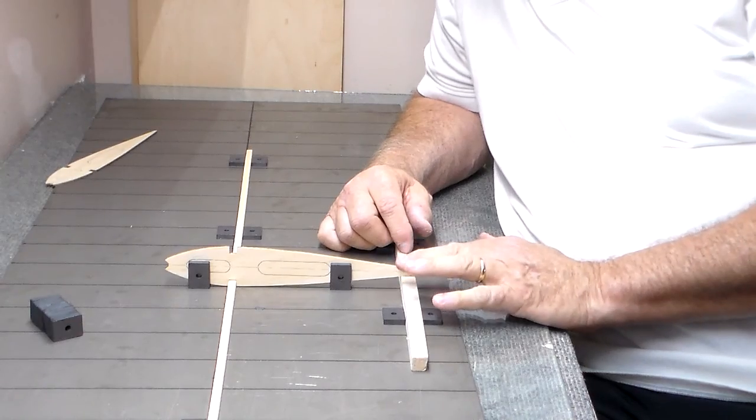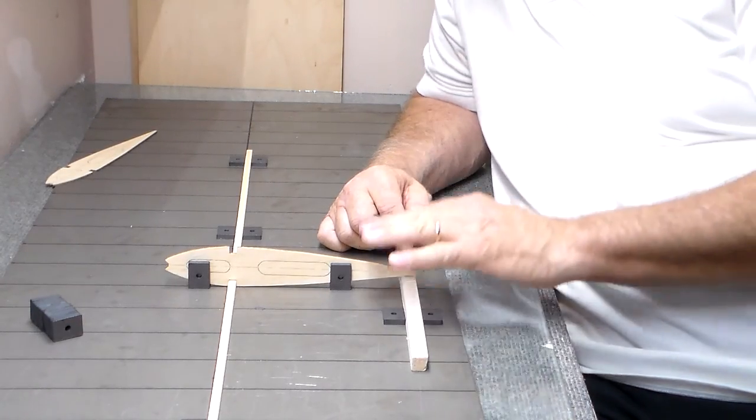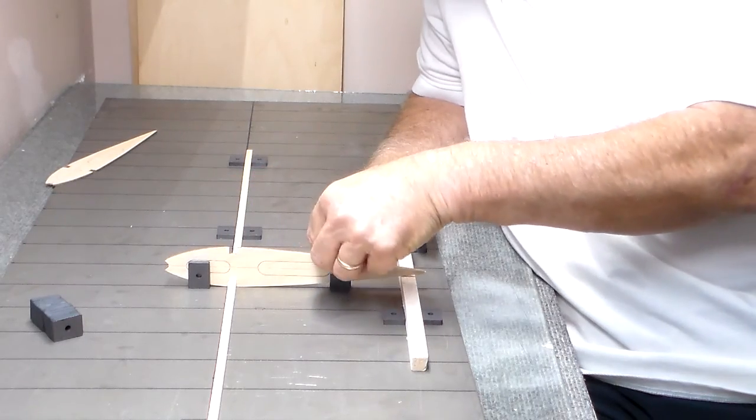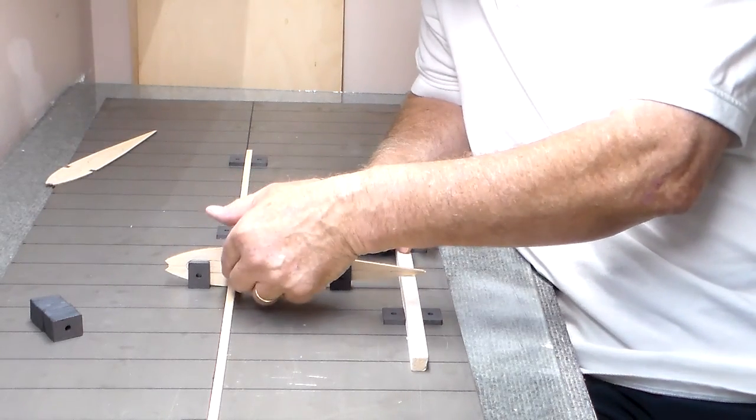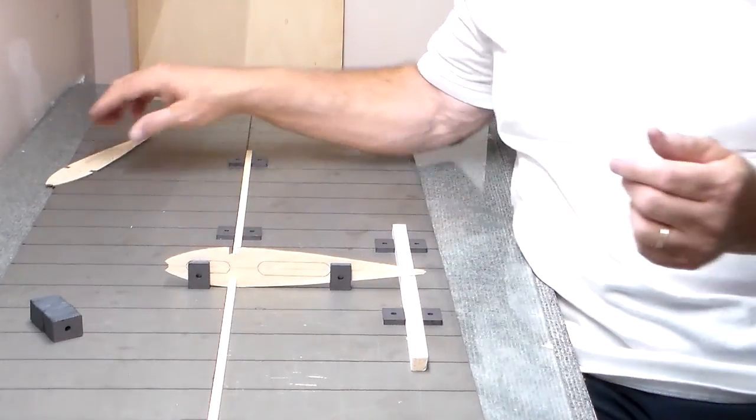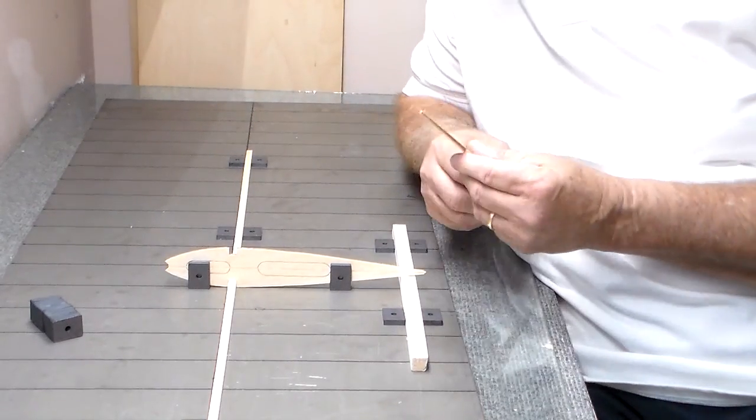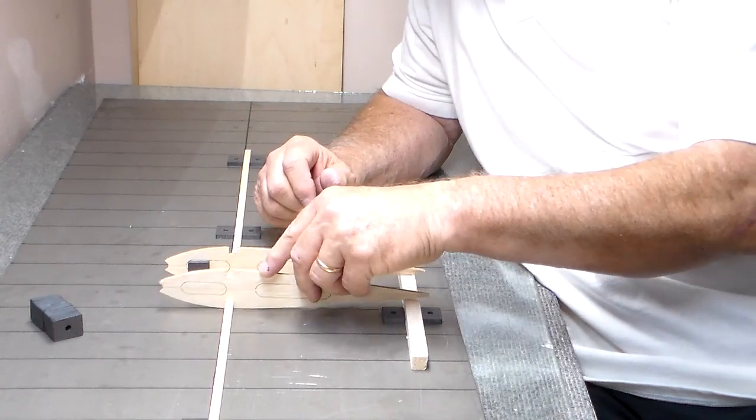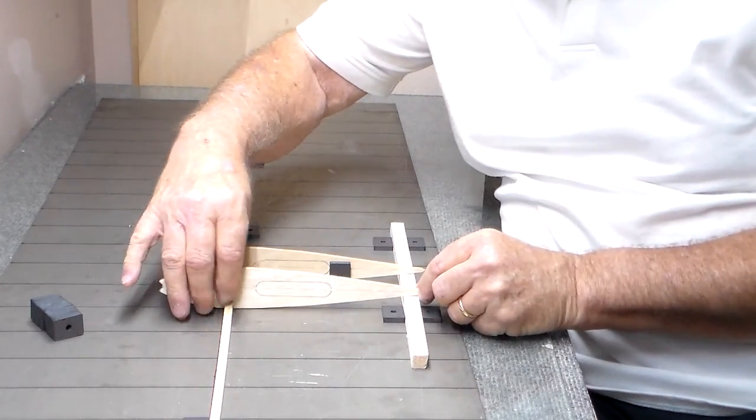This will automatically align. You may have to take your rib and make sure that it's touched down here. Every rib that you put in this way is going to be the same. You just go right down the line and then you just add your magnets to the front and also to the back like so.